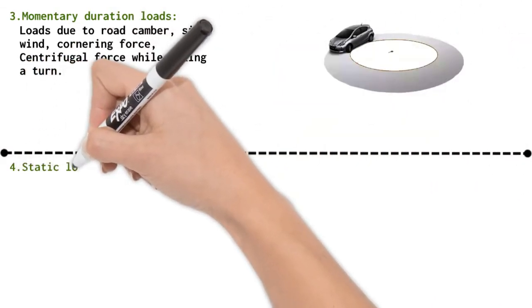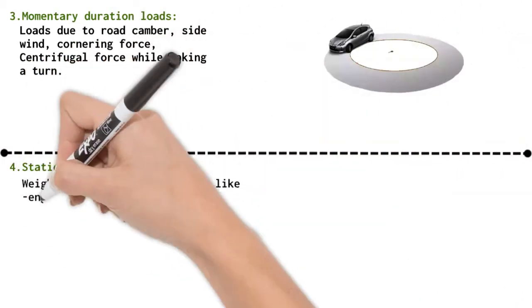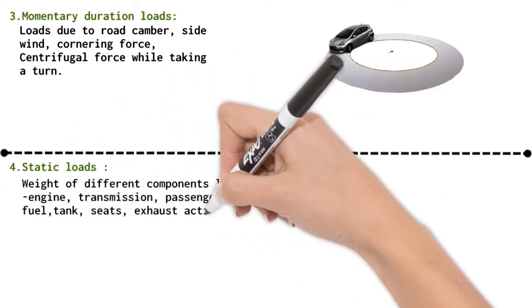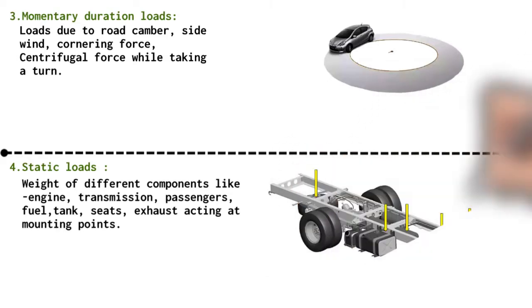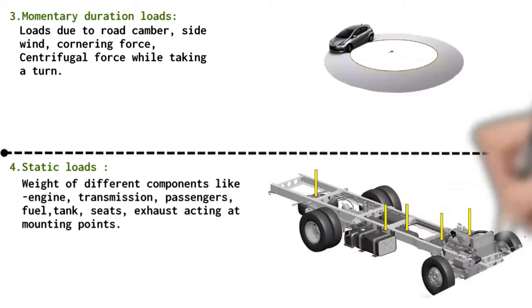Static loads: weight of different components like transmission, engine, passenger, fuel tank, seats, and exhaust acting at mounting points. All these loads can be grouped as static loads.